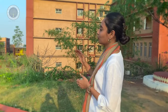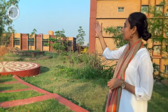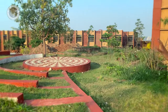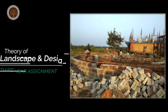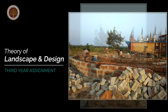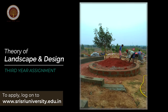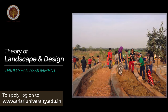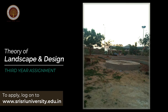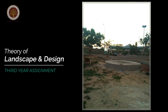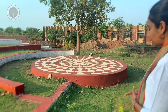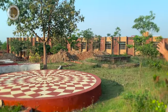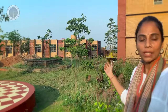Earlier there was a statue of Krishna in the center and an existing banyan tree which you see over there. This little patch of site has been redesigned, developed, and executed by our pioneer batch of architecture students, as part of their assignment in the third year for the subject called the theory of landscape and design. Here you see a mini amphitheater with a stage, and over there that side there's a concept of mandala which will be used as a sit-out space.